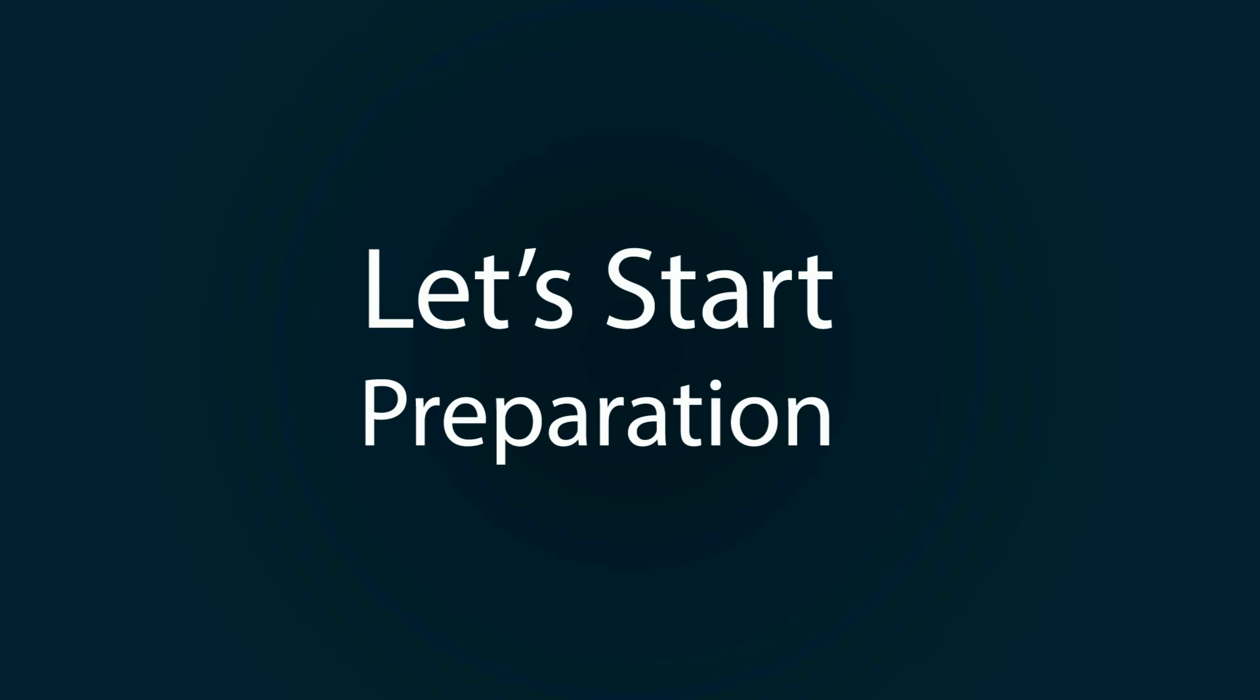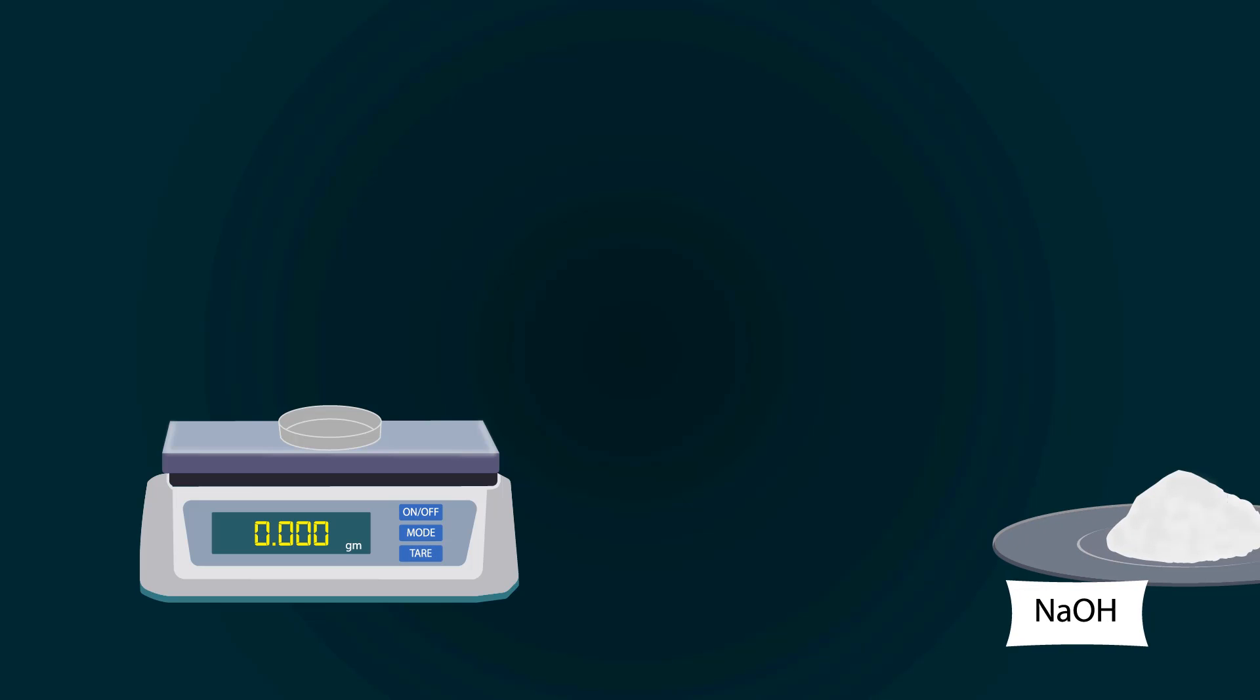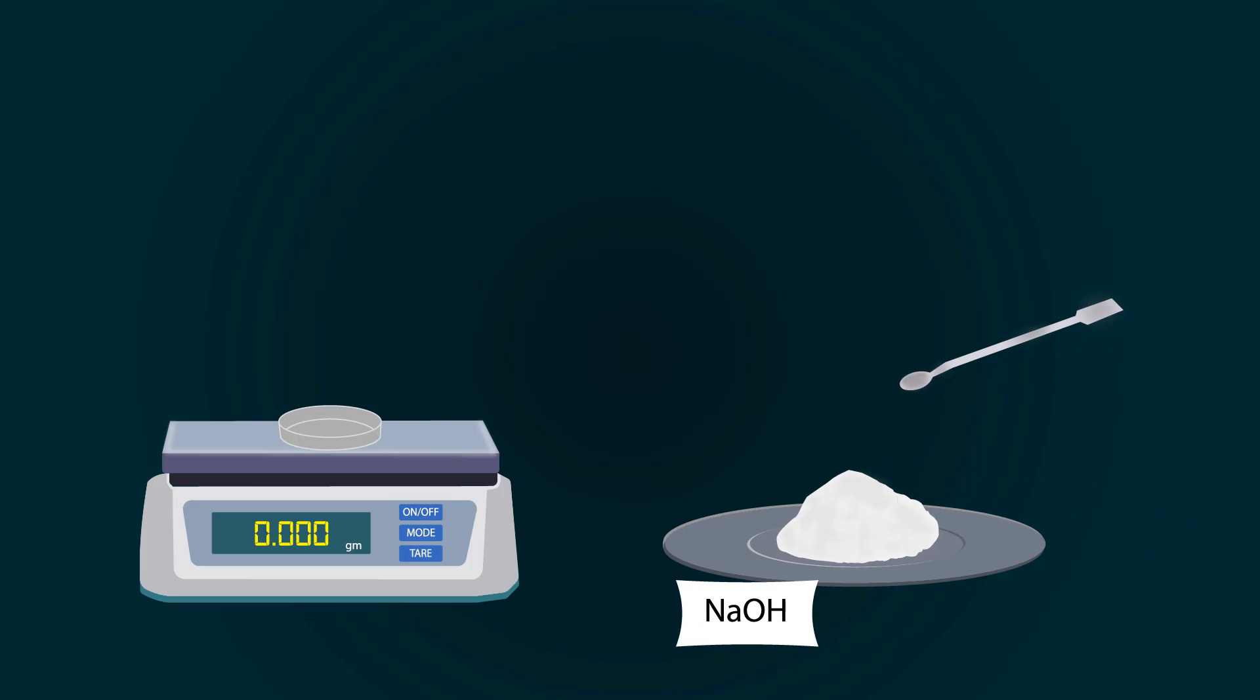Let's start preparation. First of all, take a weight balance and power it on. Now, put petri dish on it. Remember to tare it down. Now add sodium hydroxide into the petri dish with the help of spatula. Weight precisely up to 2 grams.